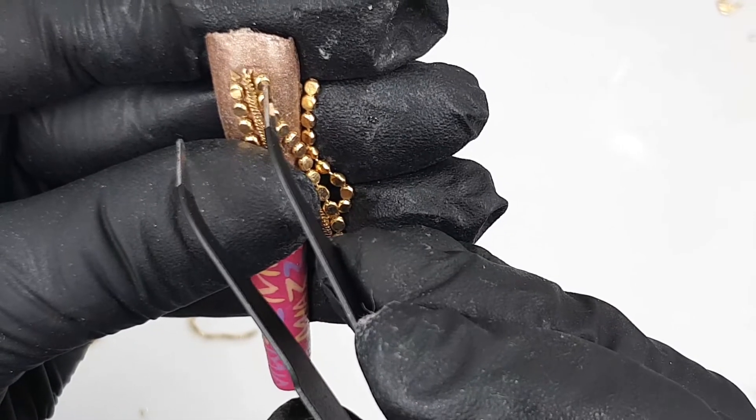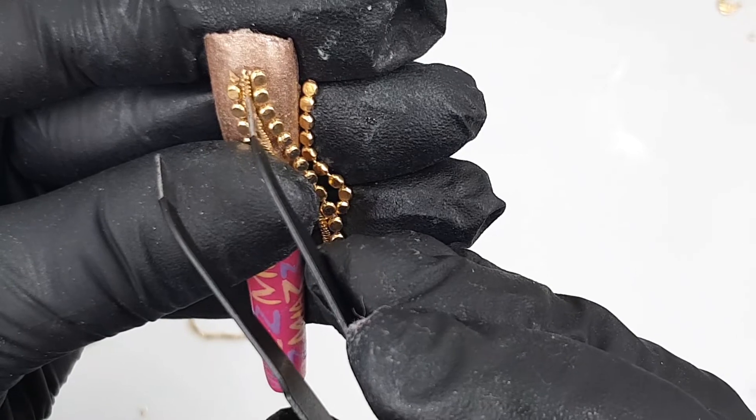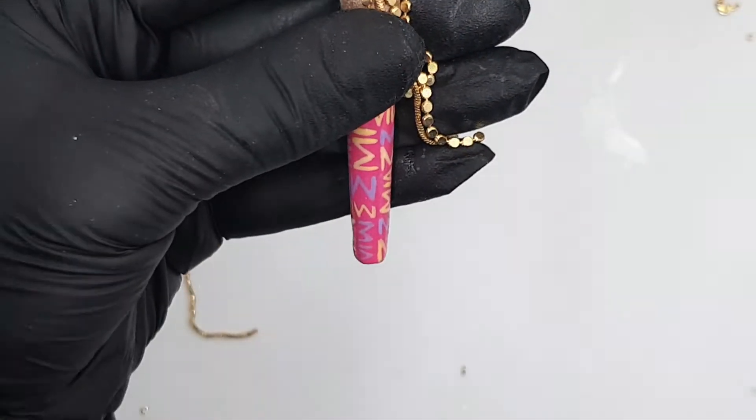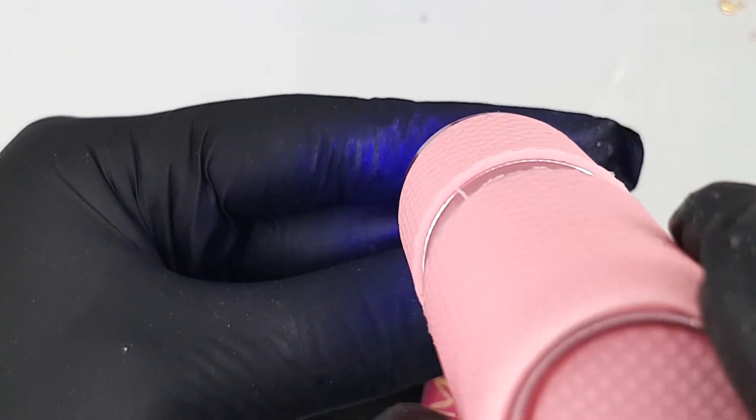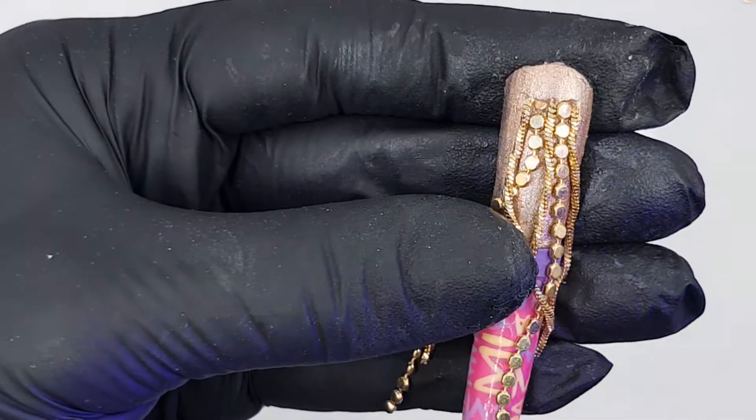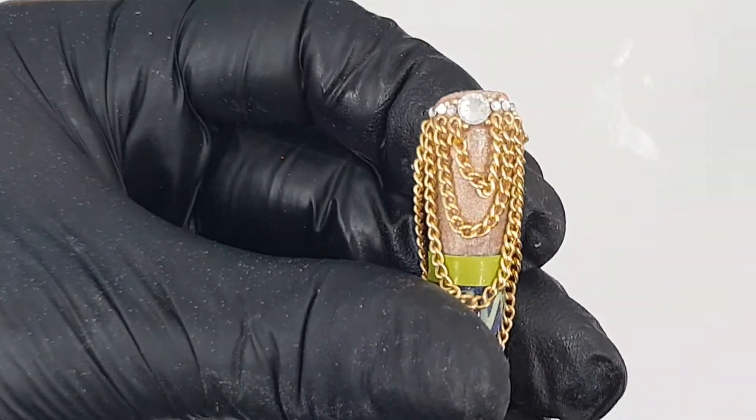It's really handy to use a tweezer in this kind of designs and parts because it will help you to fix and hold the parts together. Don't use all the chains at once because it will slip from the nail away. And of course we need to add some more bling bling to the nails.